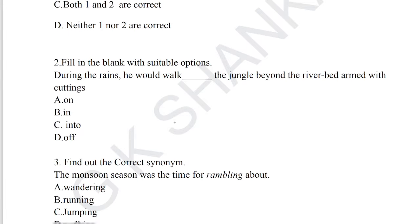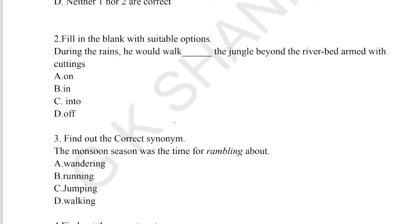Question number 2: fill in the blank with suitable options, from the grammar section on prepositions. 'During the rains, he would walk into the jungle, beyond the river bed, armed with cuttings.' 'Into' means enter — we came into the office, he came into the home, he came into the ground. Option A, 'into', is the correct answer for question number 2.